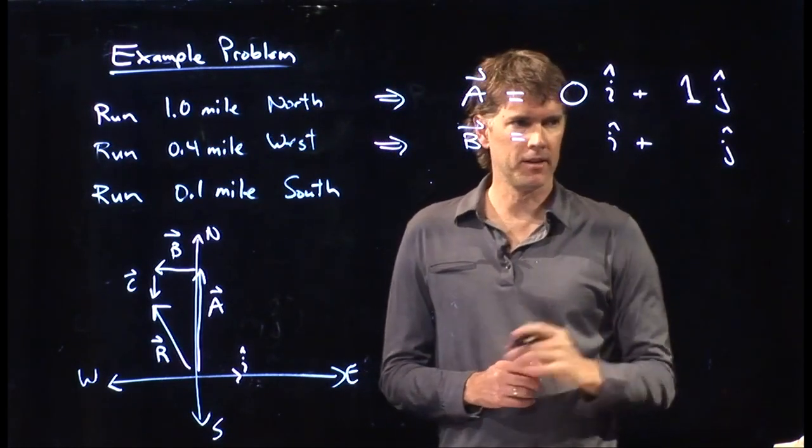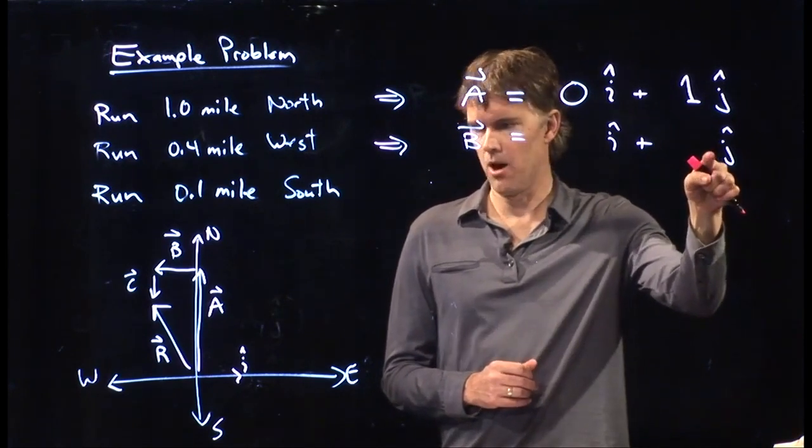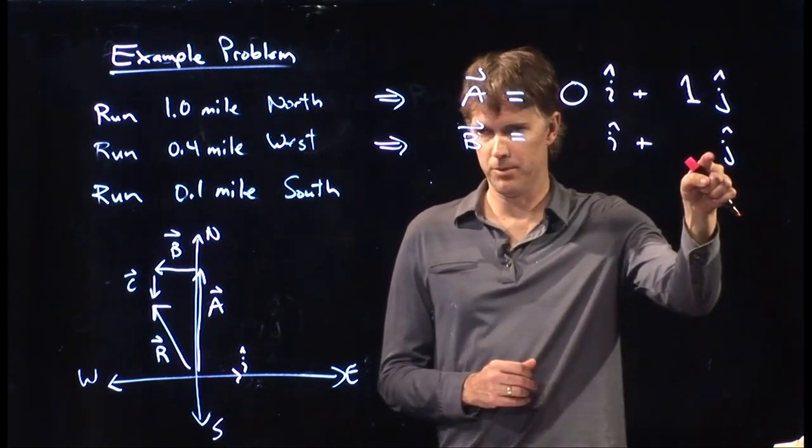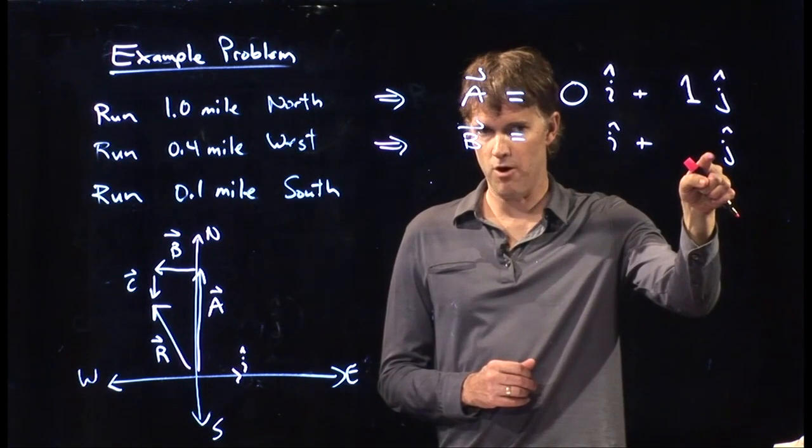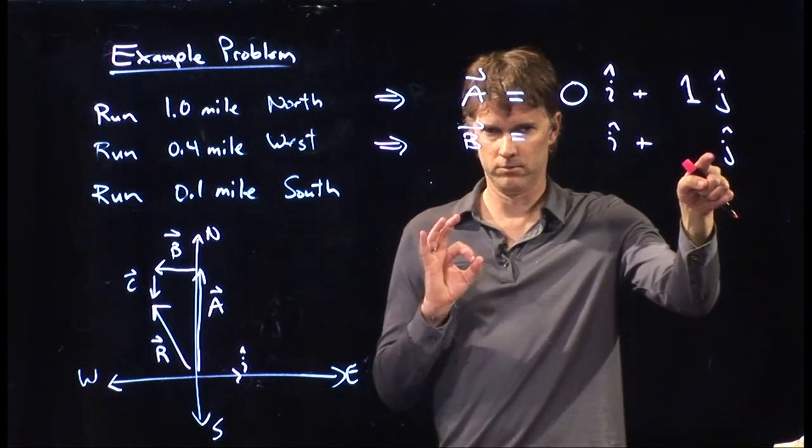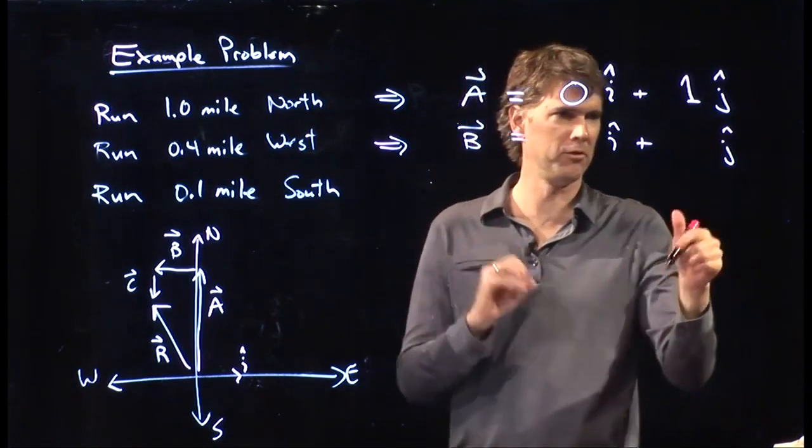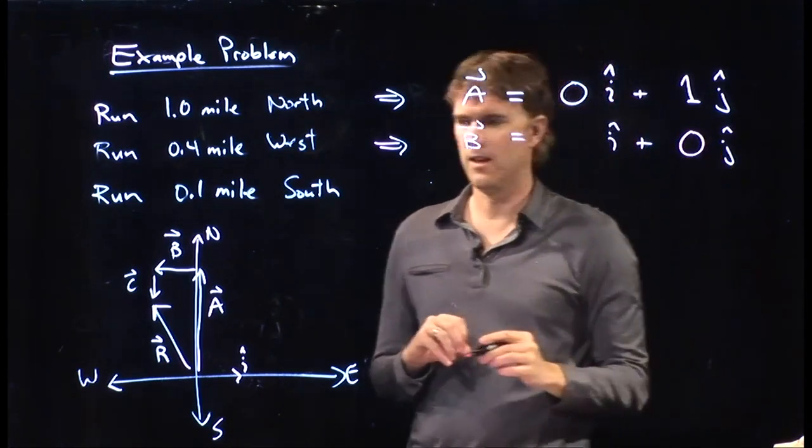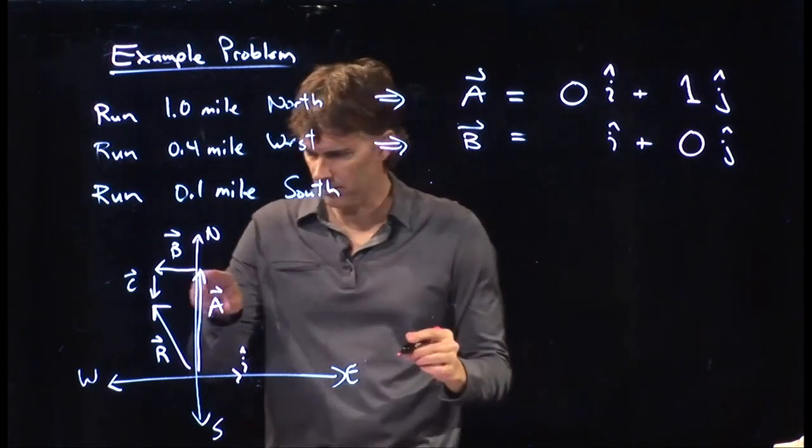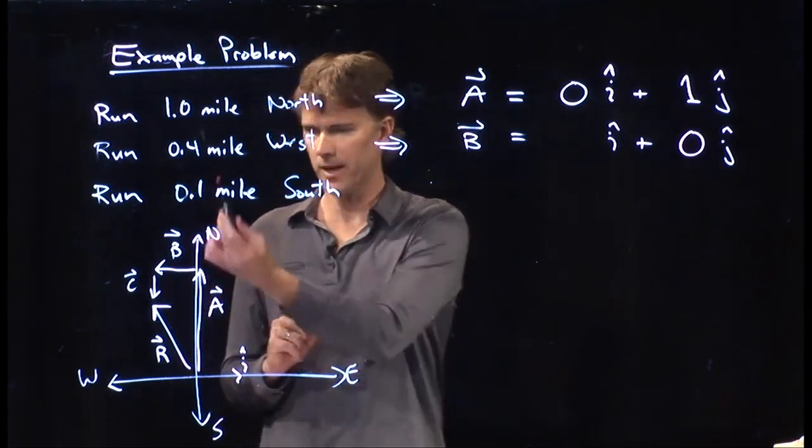What about b? Let's do the easy part first. What should I put there on the j hat for vector b? How far north is it going? Was that okay or was that a 0? That was a 0? Okay. That's a 0, right? Vector b is going perfectly west. It's not going at all north.